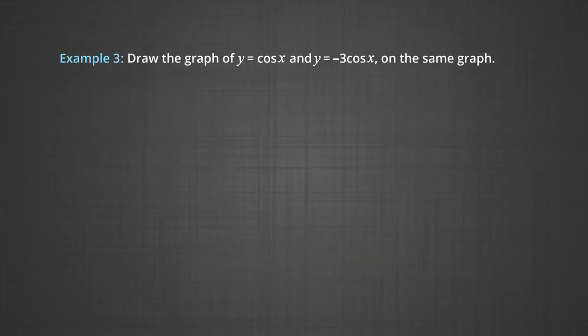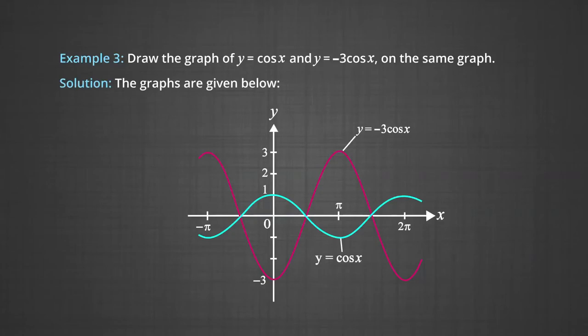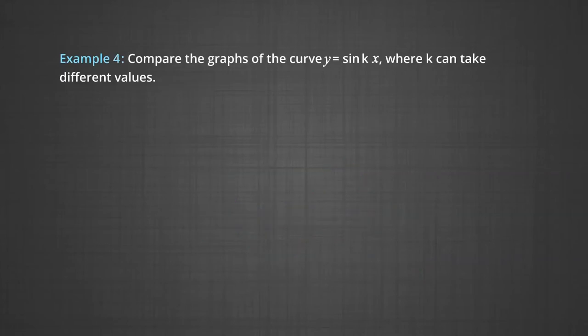In Example 3, we will draw the graph of y = cos x and y = -3 cos x on the same graph. The pink line represents the graph of y = -3 cos x, and the blue line represents y = cos x. Comparing the two, the pink graph has been stretched vertically relative to the blue graph.